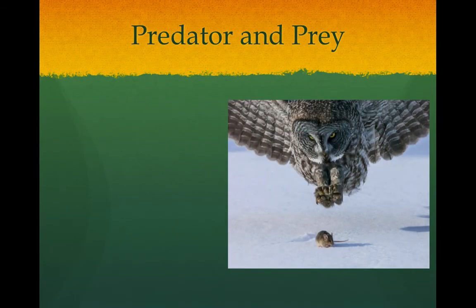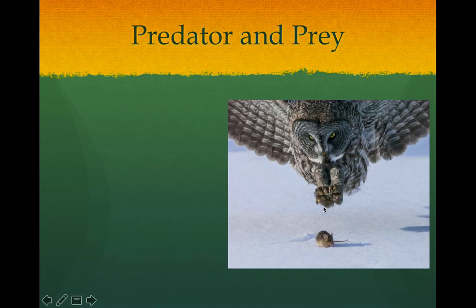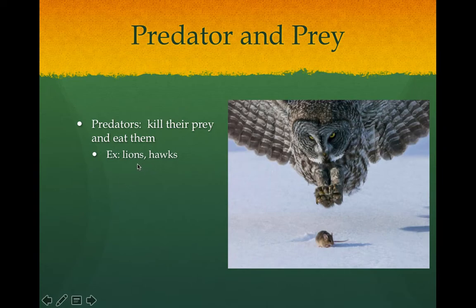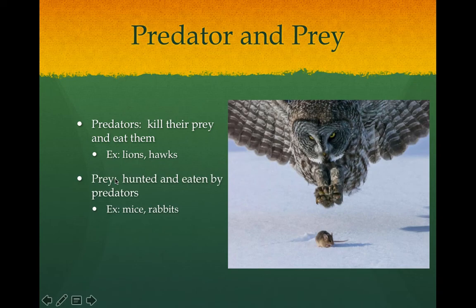Predator and prey: in this picture you can see an example — the prey is the mouse that's going to get pounced on by the owl. The owl is the predator. The predator kills the prey. Examples other than the owl would be a lion, a hawk, a shark, or even something smaller like a snake or a praying mantis that eats other bugs — they're all just eating other animals for food. The prey is what gets eaten: the mice, the rabbits, the antelope, the small fish that gets eaten by the shark.